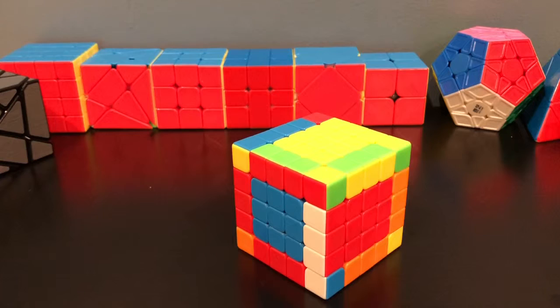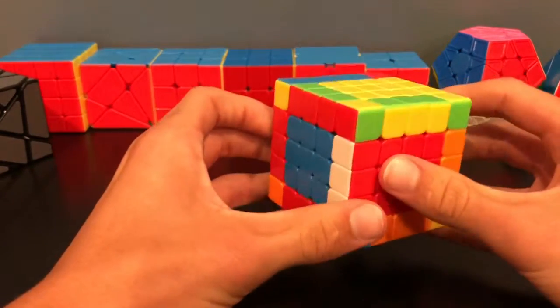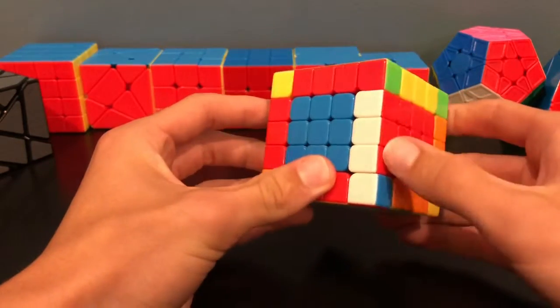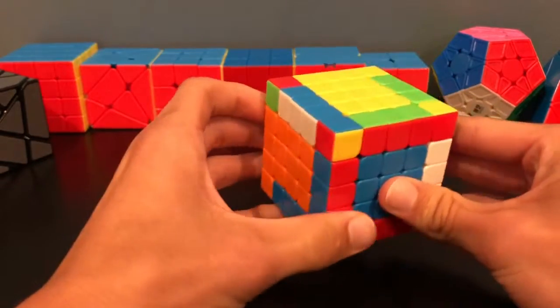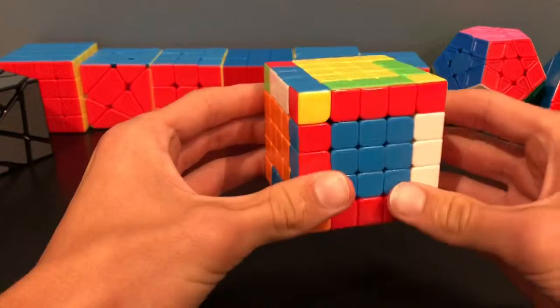The method that you're going to be learning is called the reduction method. This means that we're going to reduce the 5x5 into a 3x3. So you see here, this is one of the later steps. I have all the centers paired up as well as all the edges with their same colors. Now at this point, I could just treat this like a 3x3, these like edges, and these like centers, and then just solve it normally.